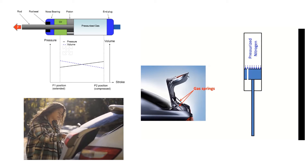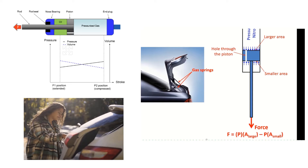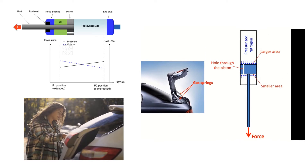At the same time, because of the hole through the piston, pressurized nitrogen also comes to the rod side and starts acting there too. So now forces are acting on both sides. The key is that the area is larger on the upper side and smaller on the rod side. Because of this area difference, a net force is generated: pressure × large area minus pressure × small area. This net force causes the gas spring to move.